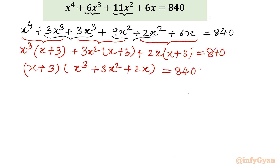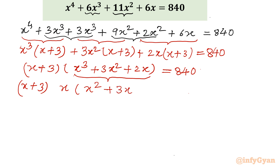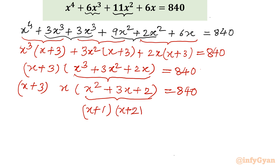So the quartic has now been converted into a product of a degree-1 and a degree-3 polynomial — factorization is done. Now we can see the cubic equation x³ + 3x² + 2x can be factorized further. As we can see, x is common straight away, so taking x out leaves x² + 3x + 2 inside the bracket. This is a simple quadratic, which factors directly as (x+1)(x+2). So overall the factorization is x(x+3)(x+1)(x+2) = 840.